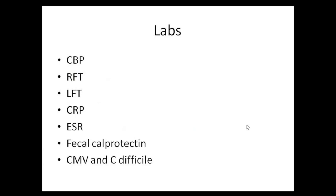Renal function tests are required because increased frequency and bloody diarrhea can lead to dehydration and pre-renal AKI. Electrolytes must also be checked — decreased sodium, potassium, and calcium levels due to increased stool frequency will lead to colonic hypomotility and distension, predisposing to toxic megacolon. These electrolyte abnormalities must be corrected as soon as possible.